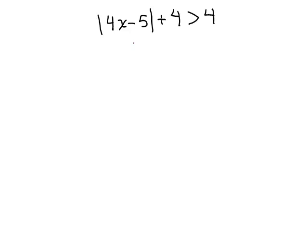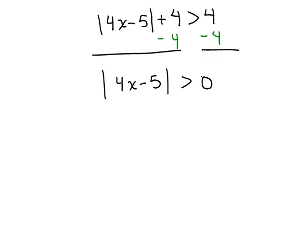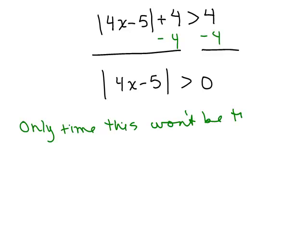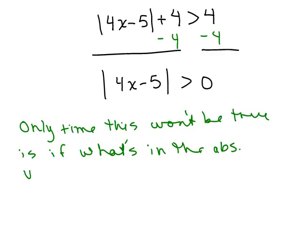Next one: absolute value of 4X minus 5 plus 4 is greater than 4. We want to isolate the absolute value, so subtract 4 from both sides. This gives you the absolute value of 4X minus 5 is greater than 0. This is really similar to the previous problem. Is there anything that's going to make this untrue? The difference is it doesn't have the equal sign. We know the distance is always greater than or equal to 0, but this says just greater than 0.